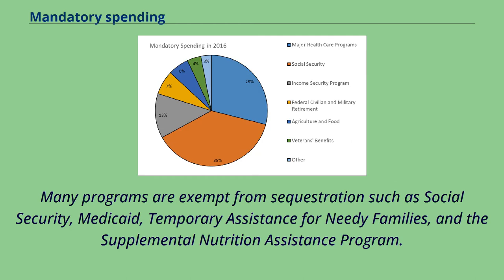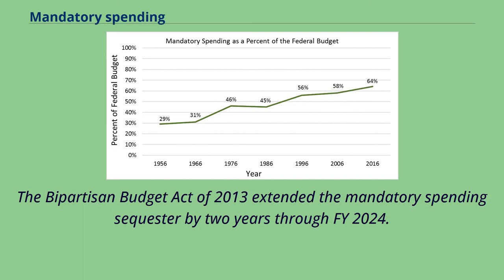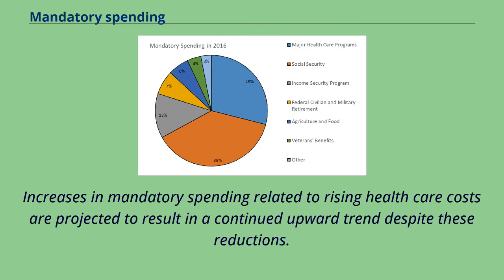Many programs are exempt from sequestration, such as Social Security, Medicaid, Temporary Assistance for Needy Families, and the Supplemental Nutrition Assistance Program. The Bipartisan Budget Act of 2013 extended the mandatory spending sequester by two years through FY 2024. Increases in mandatory spending related to rising healthcare costs are projected to result in a continued upward trend despite these reductions.